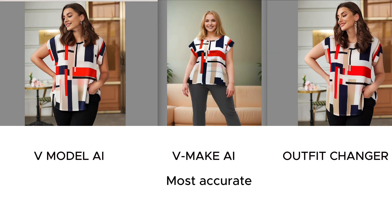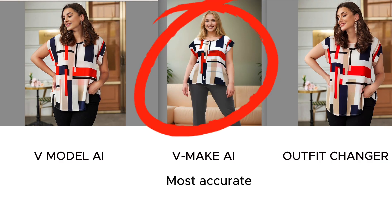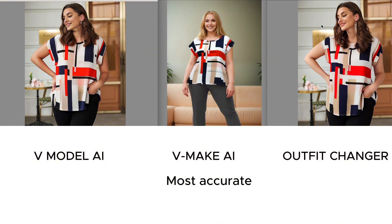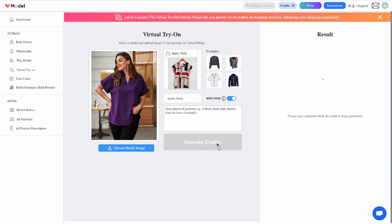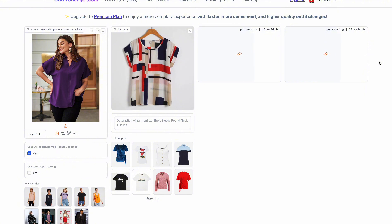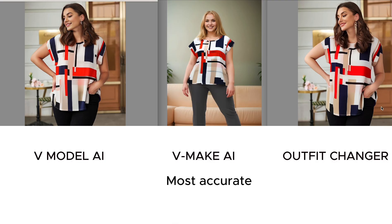With vMake AI, I don't have to worry about changing her face — she's already an AI model, so she's free to use. With the other two, because I took the image from somewhere else, I would have to change her face to prevent copyright issues — it can be done, but it's an extra step. vMake AI unfortunately took the longest to generate — over two minutes. vModel took about 25 seconds. Outfit Changer took around 42 seconds, which was quite long because there was a long queue. So in terms of time, vMake AI gave the best definition but the generation time is long. My number two is vModel and number three is Outfit Changer.